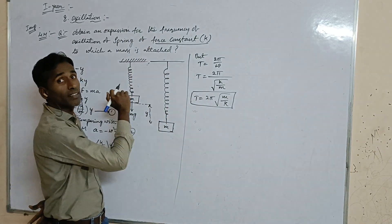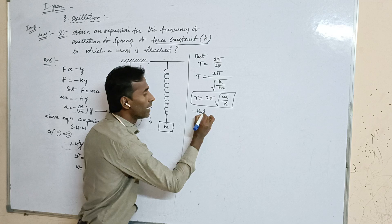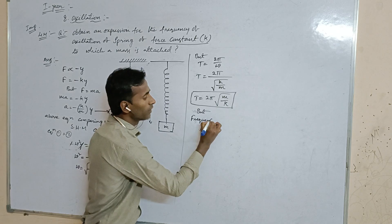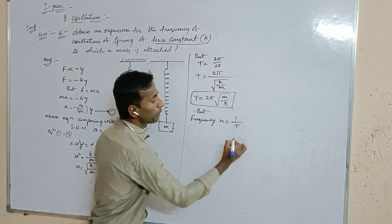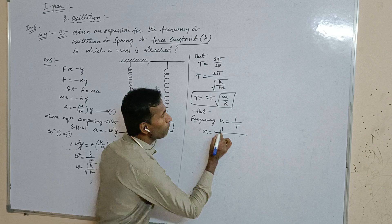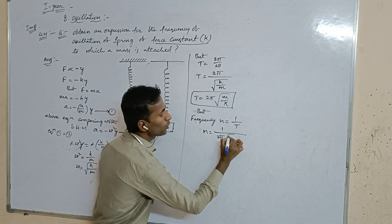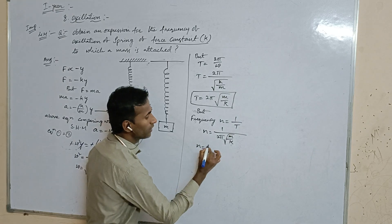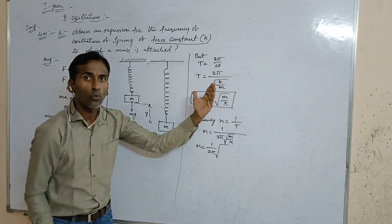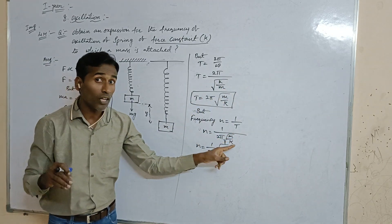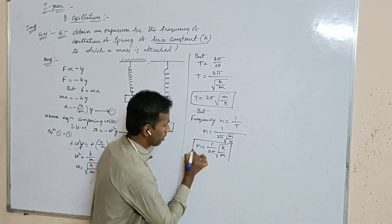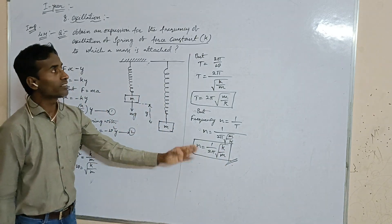The question asks for frequency. Frequency n equals 1 over T, that is, the reciprocal of the time period. So n equals 1 over 2 pi times square root of m over k. Taking the denominator value to the numerator, this becomes n equals 1 over 2 pi times the square root of k over m. This is the required frequency formula.